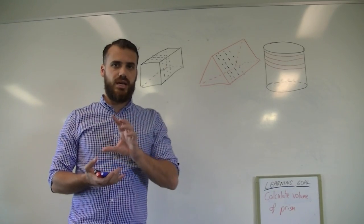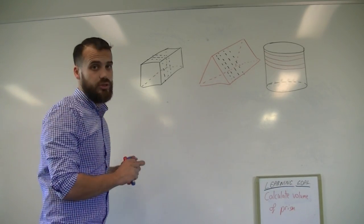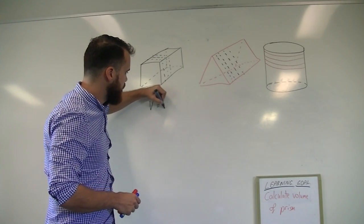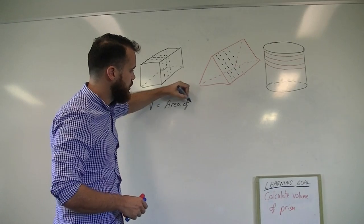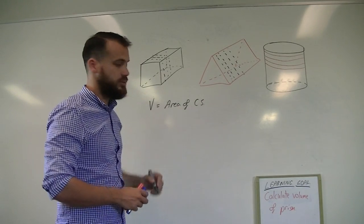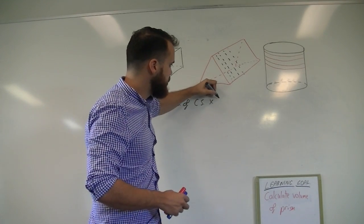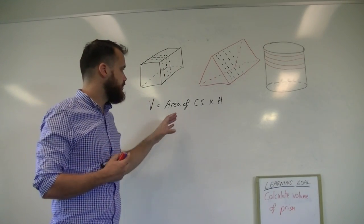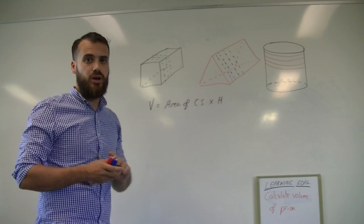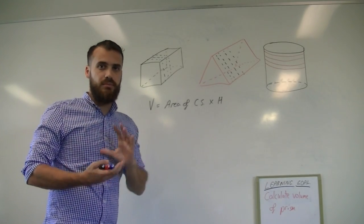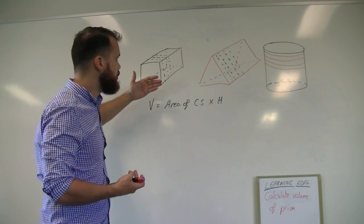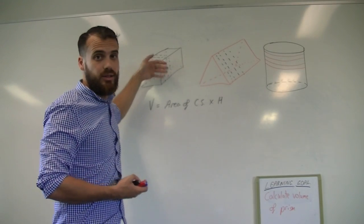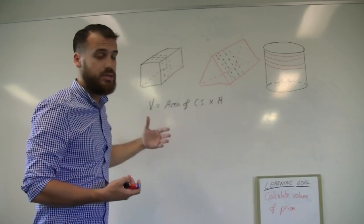Now we're going to use the same formula every single time here. The formula is volume equals area of cross section times height. Area of cross section times height. Now what that means for us, remember that the cross section is the piece of the prism. If you cut it like a birthday cake, everyone would get the same slice.